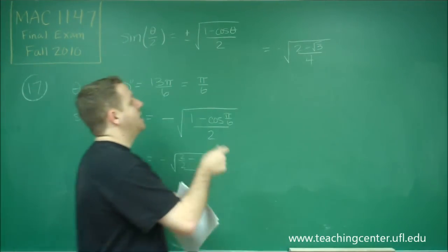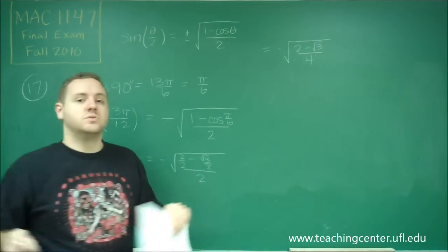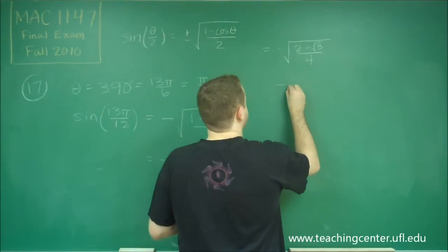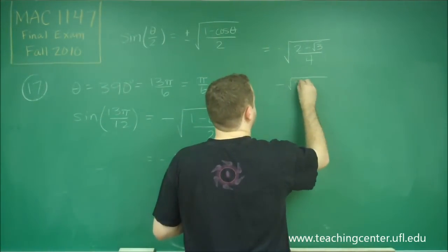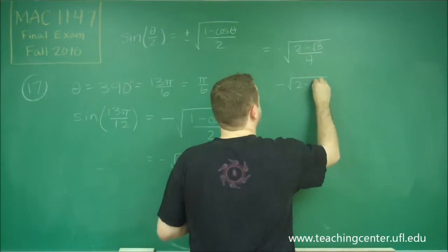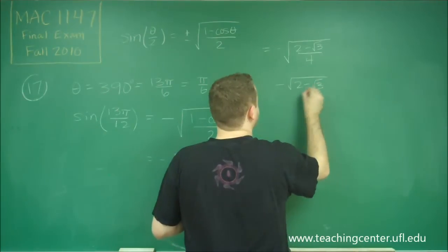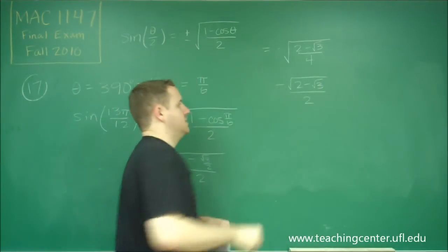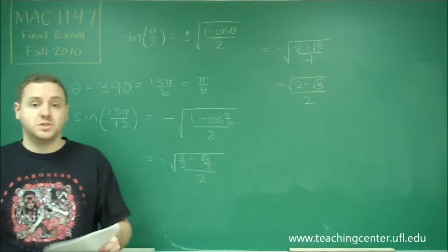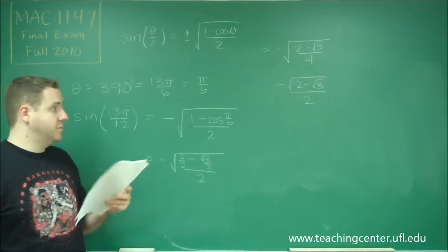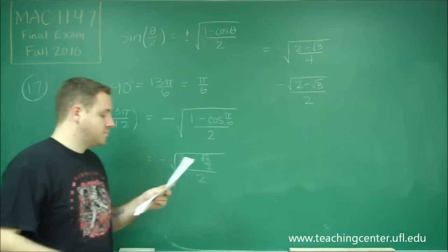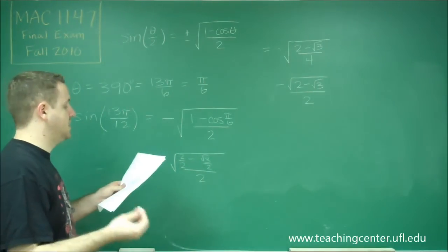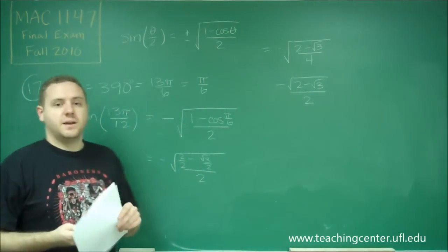And finally, that is under the square root, so that leaves us with negative radical 2 minus radical 3, all over 2 — because a 4 under the radical is the same thing as having a 2 outside the radical. And that gives us answer choice C.